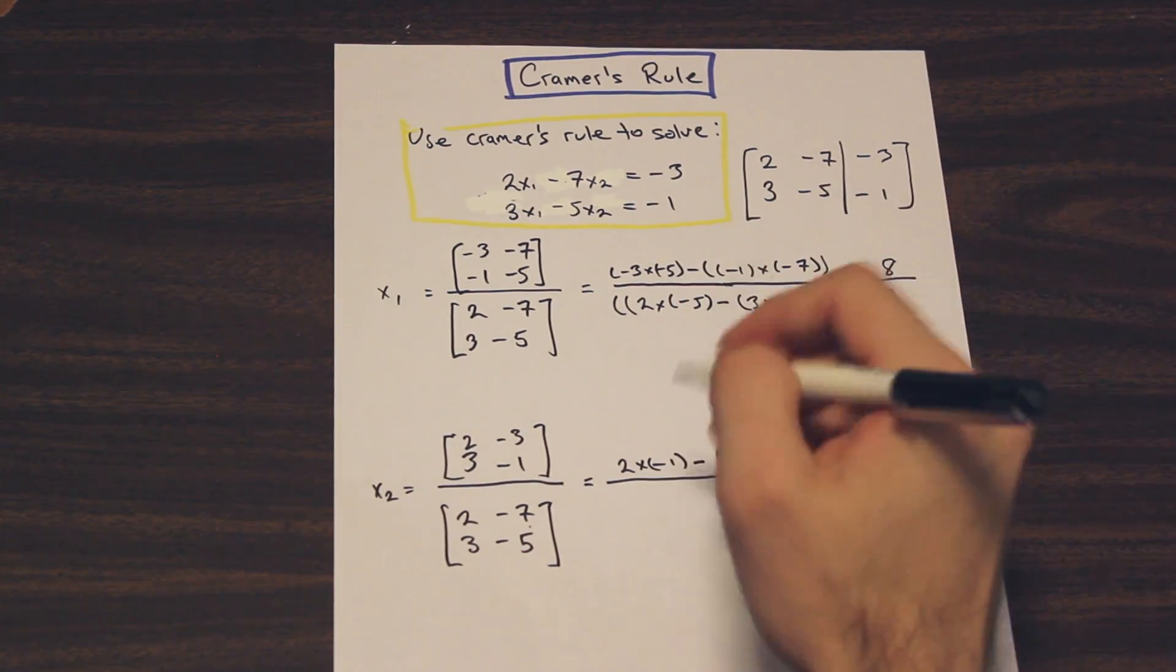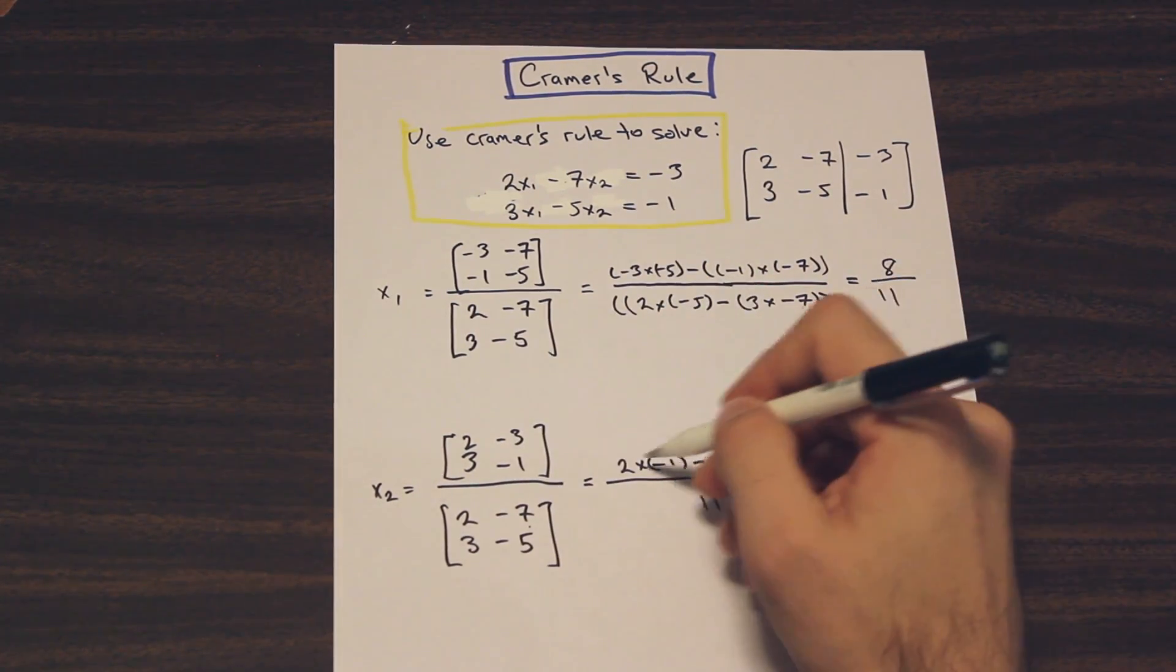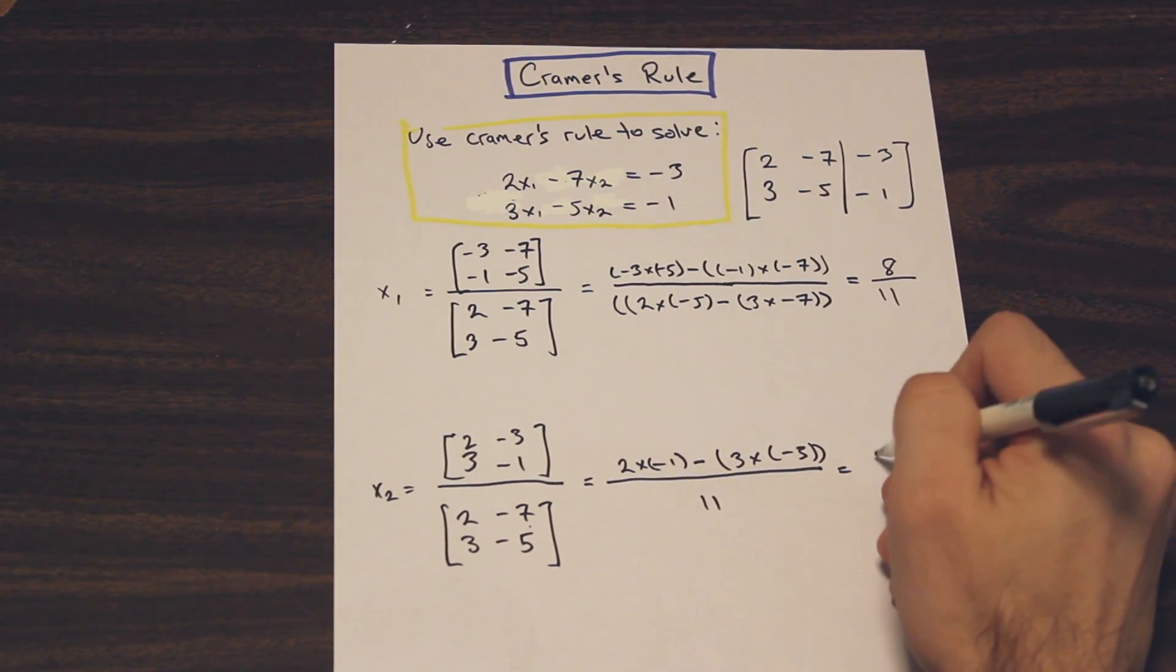And the bottom value is going to be the same, because it's exactly the same on the top and the bottom. So we have negative 2 minus minus 9, so negative 2 plus 9 is going to be 7. So we have 7 over 11, and that is the answer.